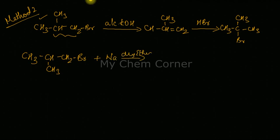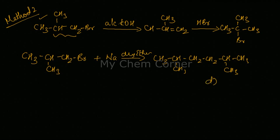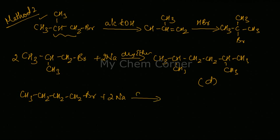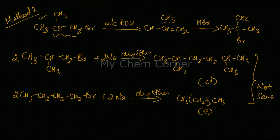For the Wurtz reaction with this new A, combining two molecules of CH3CH(CH3)CH2Br with sodium in dry ether gives compound D: CH3CH(CH3)CH2CH2CH(CH3)CH3 — that is, 2,5-dimethylhexane. Comparing this to the product of n-butyl bromide's Wurtz reaction (octane), both products are clearly not the same. This is exactly what the question requires.